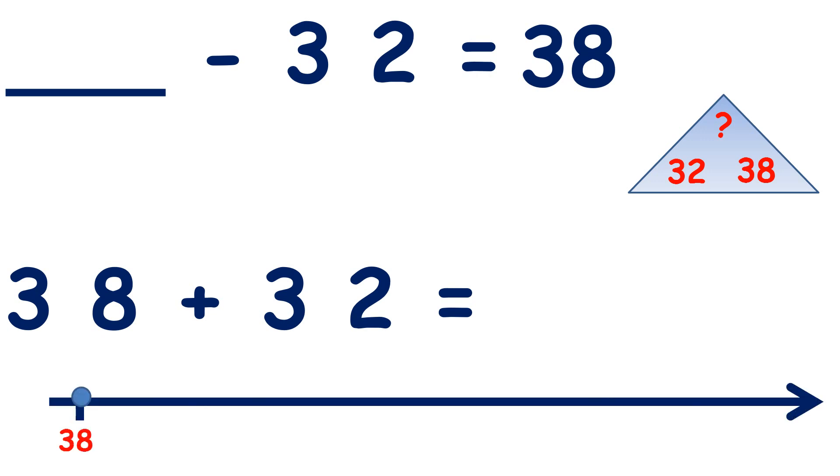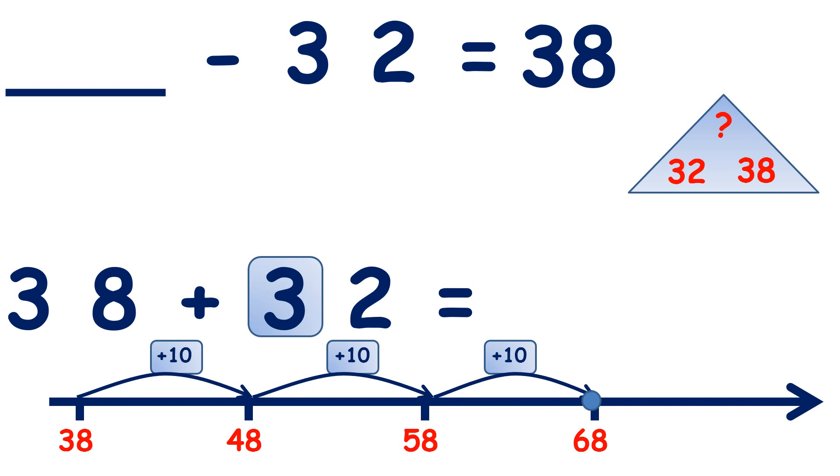We start on 38. Add 10, we get 48. Another 10, 58. And a third 10, 68. So we've added our three tens.